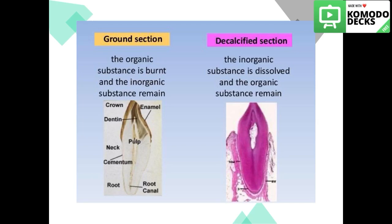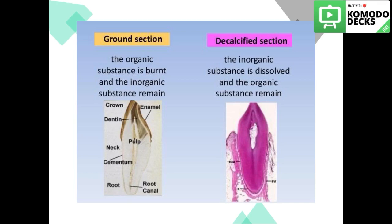While the organic substance, which is the pulp, is burned out in the ground section. Conversely, in the decalcified section, the enamel, which covers the dentine, is dissolved — the inorganic material is dissolved and the organic substance remains. The dentine has a high organic material percentage in its components, so we can see it in this section. Also, the pulp is preserved and visible in the decalcified section.